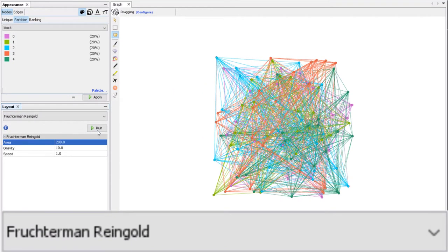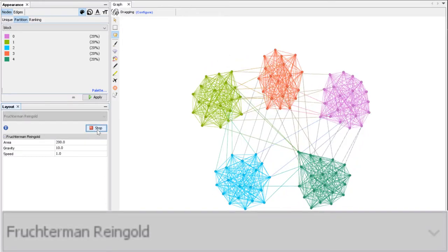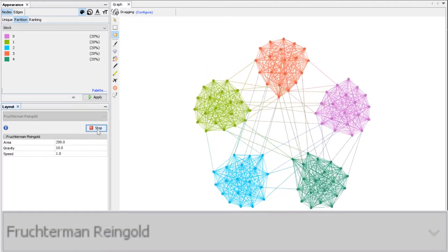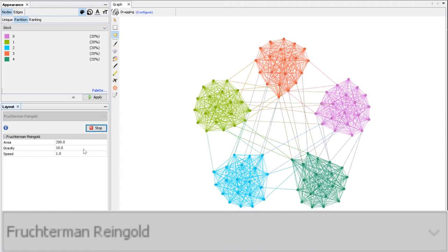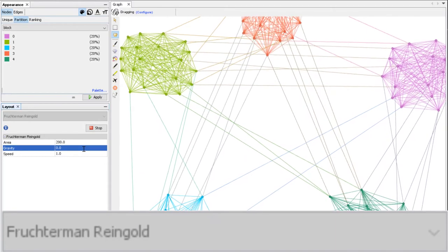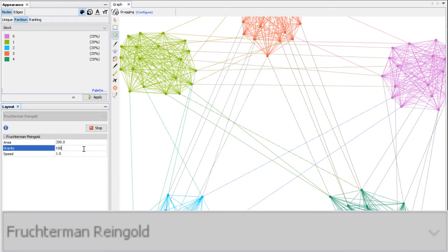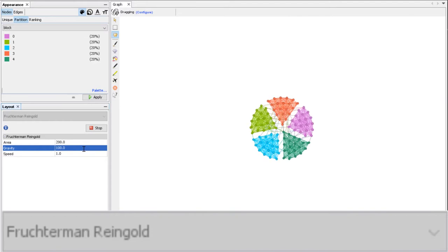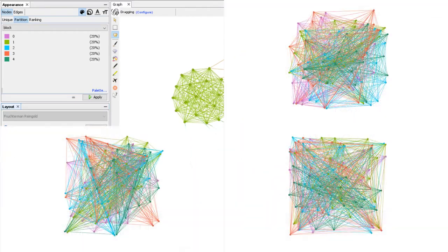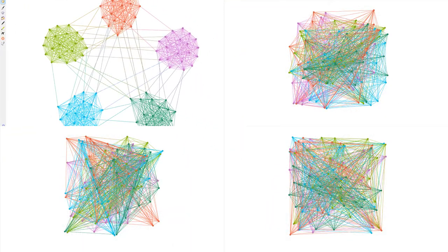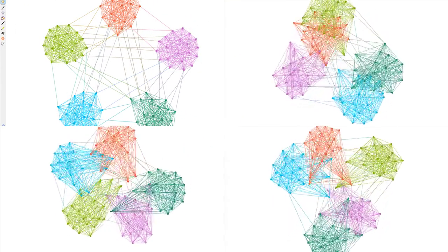This is Fruchterman-Reingold. You can change the gravity which attracts all the nodes to the center. If you put 0 it does that. If you put 100 it does this. I like 5 because I don't like it to be too packed. Of course, if I use different random positions, I will have different results.